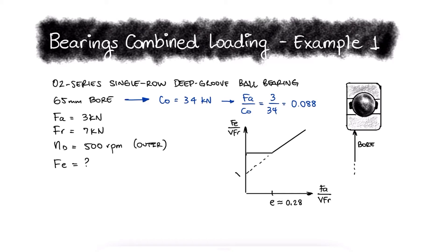With V equal to 1.2, since the outer ring is the one rotating, FA over VFR is equal to 0.357.